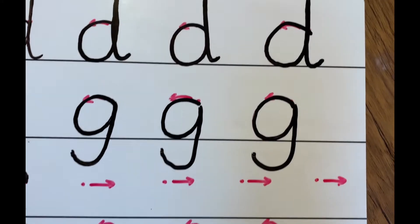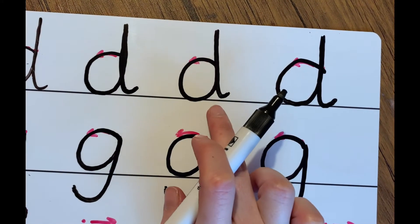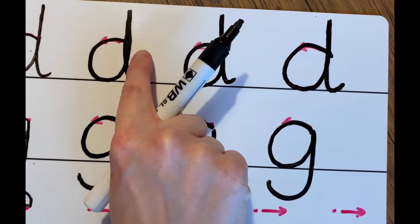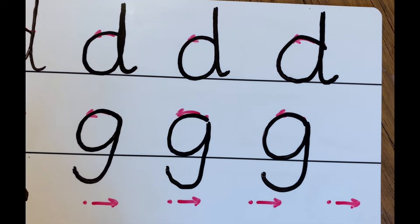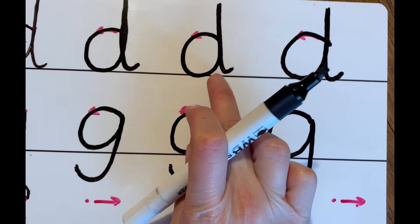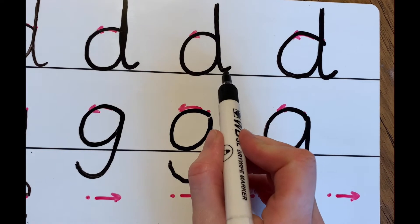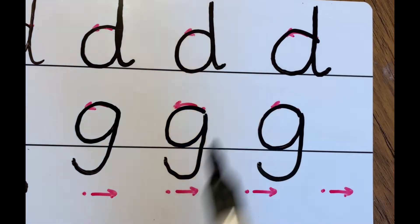Let's have a look at my d. I think this one was my favorite out of my d's. I had a bit of a wobble on this backbone here, but I like this one. He's got a nice round tummy and a tall backbone. I could improve him though by making sure that his flick sits on the line.